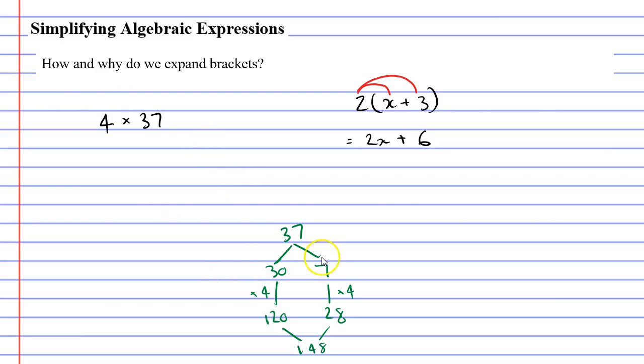Now, the split strategy, which a lot of you have used before, is exactly the same as expanding brackets. Looking back here, let's take the 37 and write this in brackets as 30 plus 7, because 30 plus 7 is the same as 37.